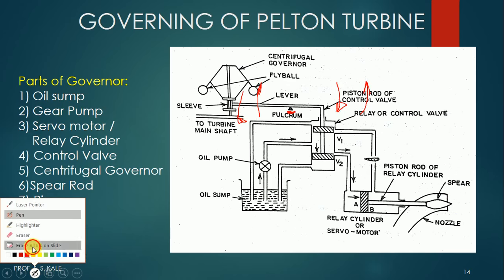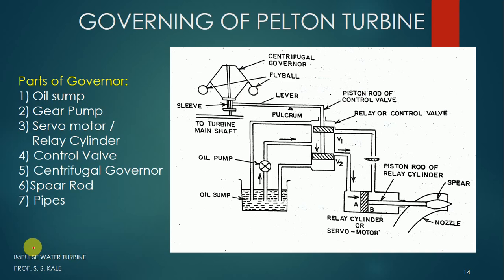Now let's discuss two conditions: high speed and low speed. When the load on the turbine reduces, the speed of the turbine increases — load and speed are inversely proportional. The increased speed is transmitted to the centrifugal governor. As the governor speed increases, the fly balls move upward. When the fly balls move upward, the sleeve also moves up, and as the sleeve moves up, this side of the lever moves up.